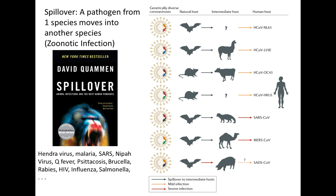This leads us to an important concept we'll discuss a lot today: spillover. Spillover is when a pathogen moves from one species into another — commonly described as a zoonotic infection. All coronaviruses have this pathway. I want to give a shout-out to one of my favorite books by David Quammen called 'Spillover,' which highlights in an entertaining and scientific way how viruses including Hendra virus, malaria, SARS, and others have spilled over from an animal population into a human population.